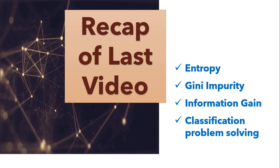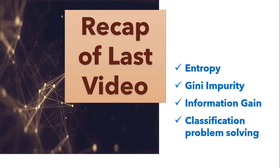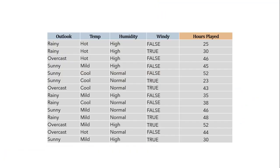Let's quickly understand this using a real world example. We are going to use the dataset shown on the screen. Columns outlook, temp, humidity and windy are inputs, and hours of play is the output or target column. According to weather conditions, the model has to predict how many hours a user can play the game outside. We will use the ID3 algorithm for constructing the decision tree for regression by replacing information gain with standard deviation reduction.